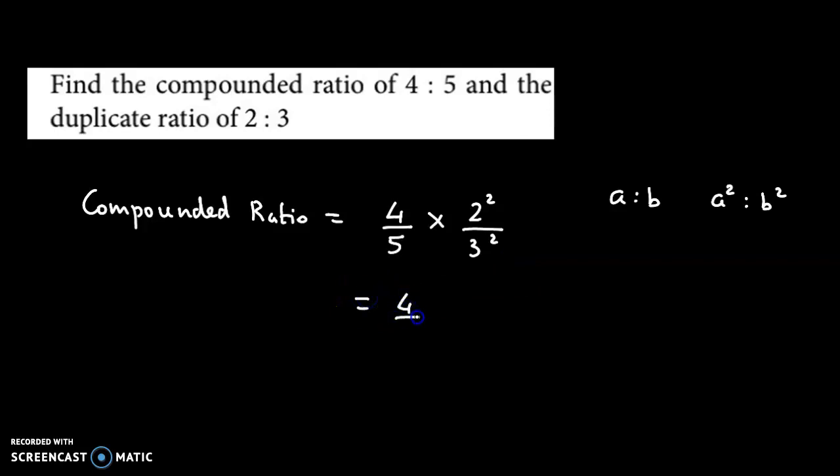We have 4/5 times 2²/3². 2² is 4, 3² is 9.